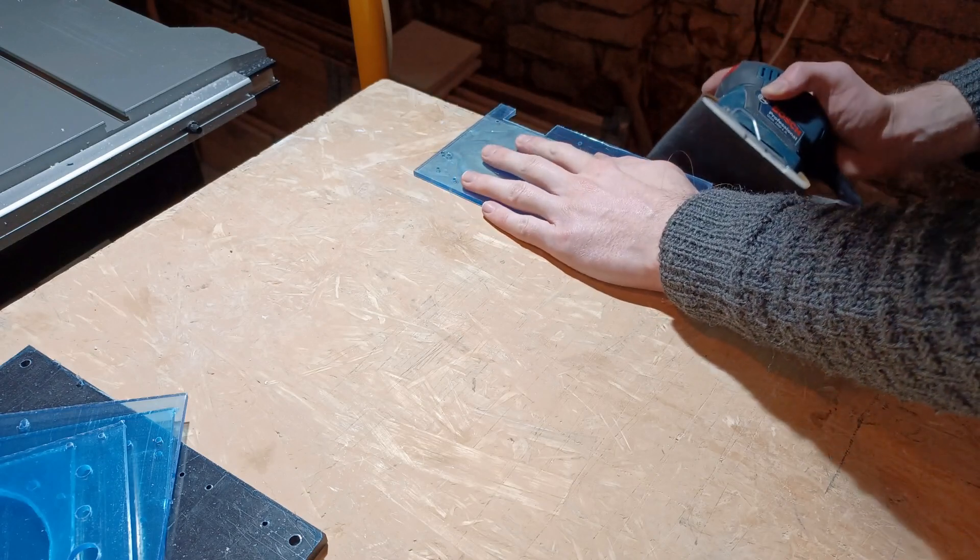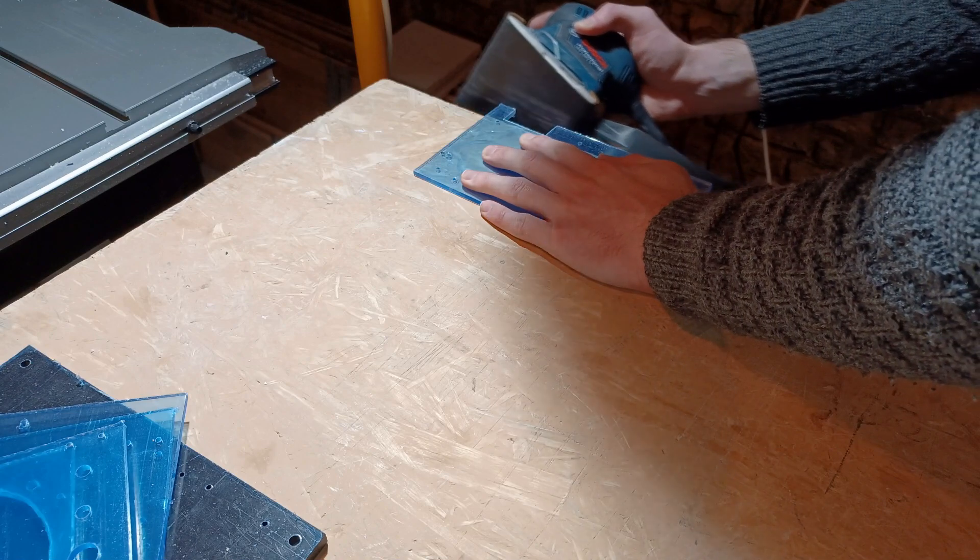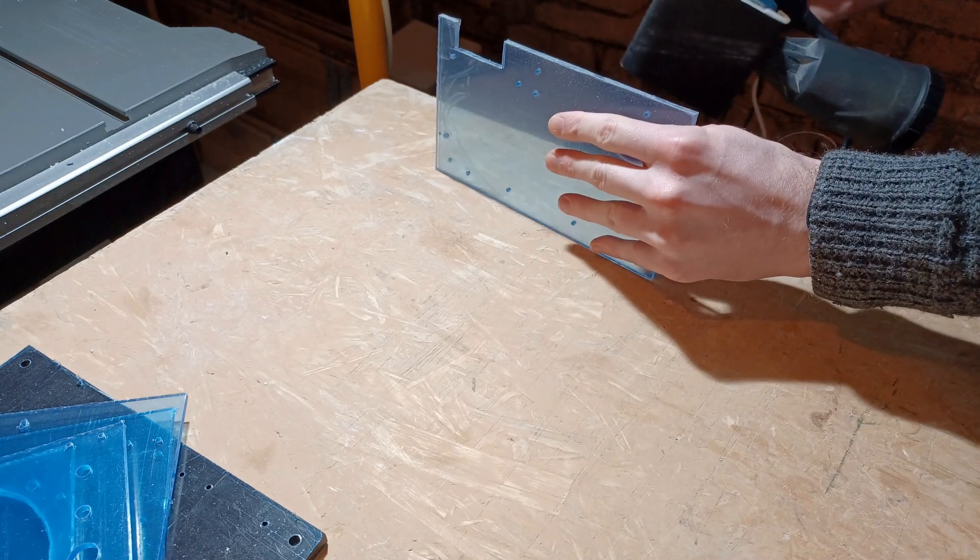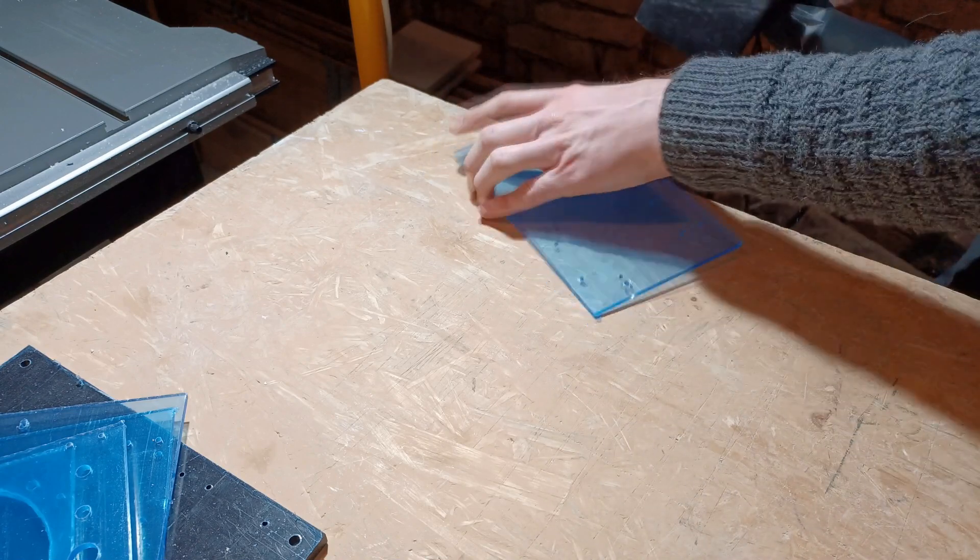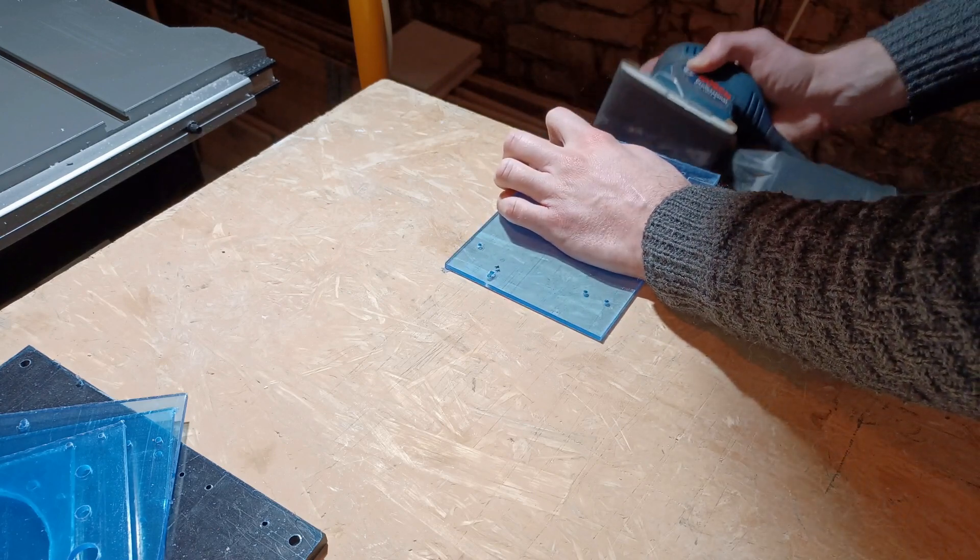While sanding the edges of the acrylic, I make sure to go gently on the side that will touch other surfaces so that they don't skew the dimensions and make a loose fit. I will be more thorough on the visible edges to make them look better, so I'm using 60 grit sandpaper to get rid of all the snags from the table saw.